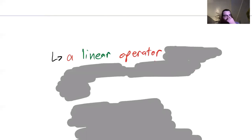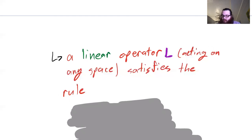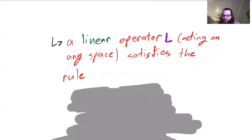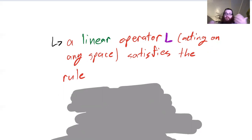The example I was getting at from the very start is this notion of a linear operator. So what is a linear operator? Well, if our operator — we're going to call it L — acting on a space, so it could be a space of functions, a space of vectors, a space of numbers, just some operator acting on some space.